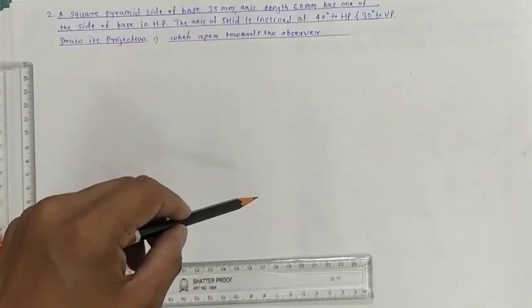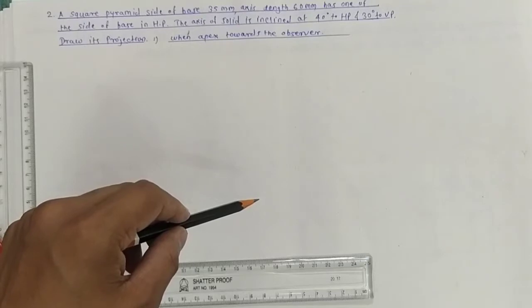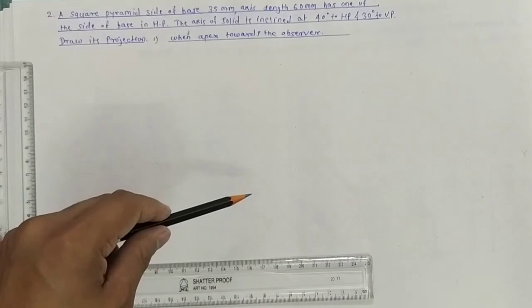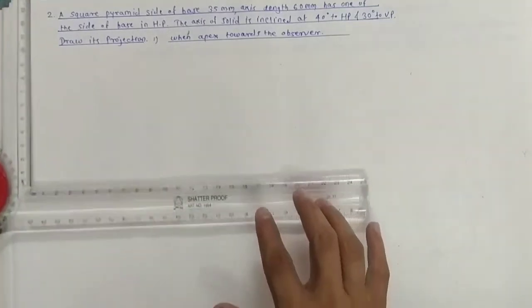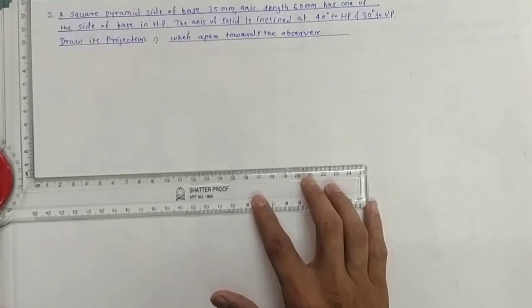There are three stage problems. In the first stage, we get the simple position by considering the axis of the solid perpendicular to HP. In the intermediate position, the axis is inclined at 40 degrees to HP, and the third condition has the axis inclined at 30 degrees to VP. So first of all, draw the XY line and draw the initial position of the square pyramid.